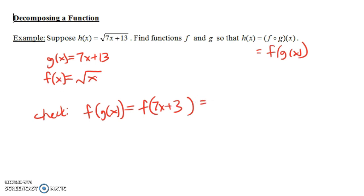Well, f of x is the square root of x. f of anything will be the square root of that anything. So f of 7x plus 3 is going to be the square root of 7x plus 3. And notice that is our original function h of x. So we did it correctly. We found our two functions f and g, so that when we compose them, we end up with h.